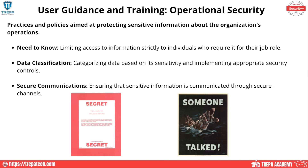Operational security covers practices and policies aimed at protecting sensitive information about the organization's operations. This includes ensuring good mandatory access control, limiting information to individuals who require it, enforcing least privilege, maintaining good data classification, and using secure communications for sensitive information. While government environments have clearly defined classifications like secret and top secret, private sector organizations must establish their own definitions of private, sensitive, and confidential data along with appropriate access controls.